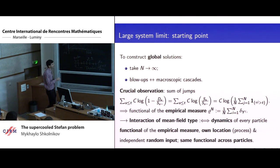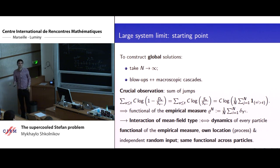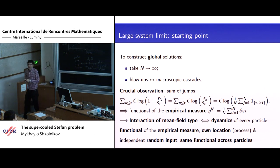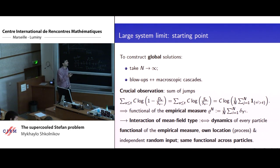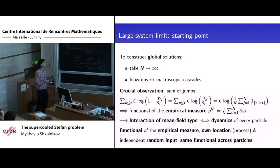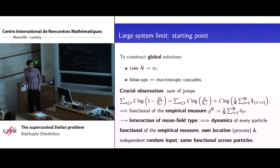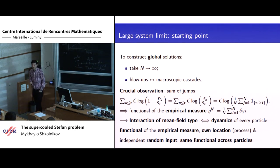Of course, what I want to argue is that in the hydrodynamic limit — as you let the number of particles go to infinity — the empirical measure of this particle system will converge to the solution of the limiting problem, and this will give us existence. To justify why you would even expect a limit as the number of particles becomes large, I have to walk you through a little computation.